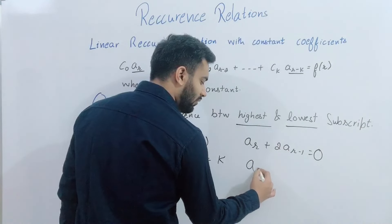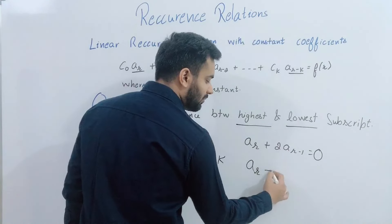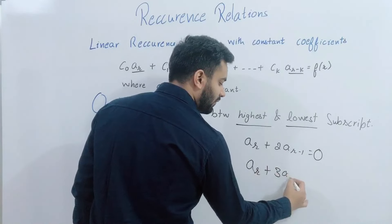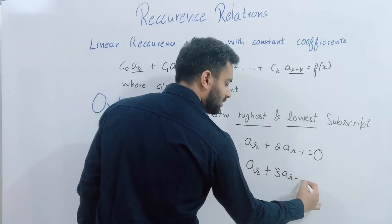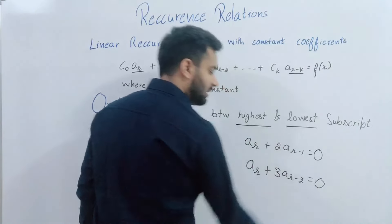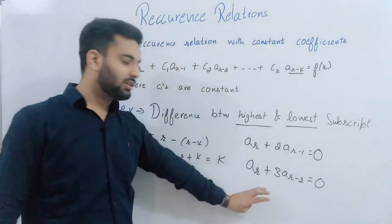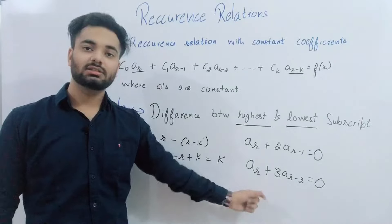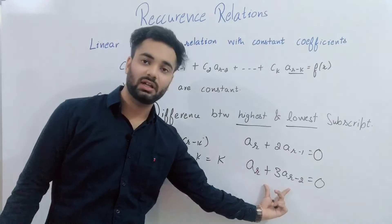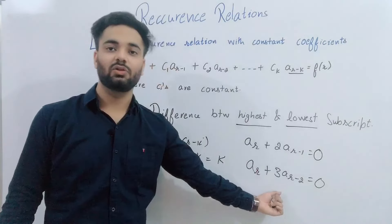Another example: A(R) + 3·A(R-2) = 0. What is the order? The difference between the highest subscript R and lowest subscript R-2 gives order equal to 2. And since the right-hand side is 0, this is a homogeneous equation.